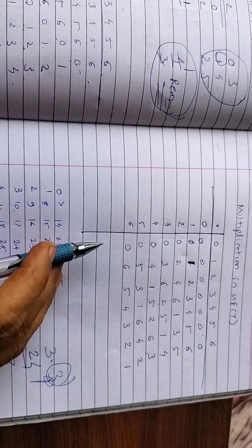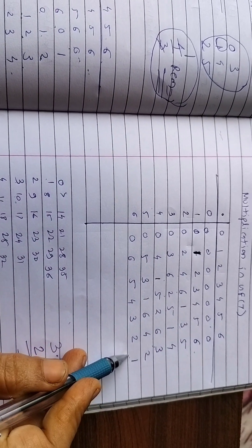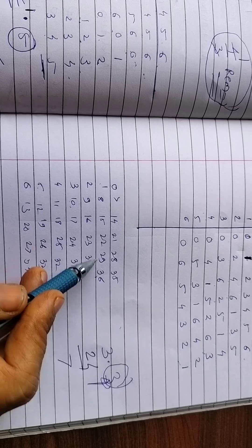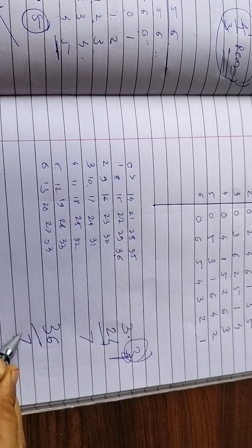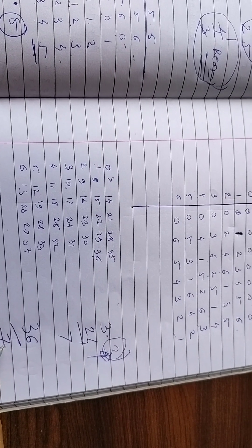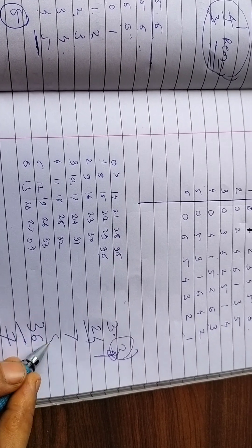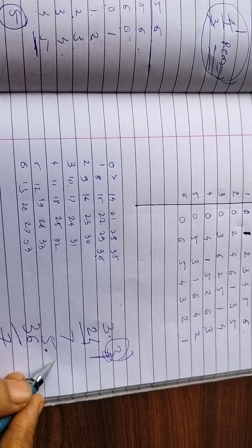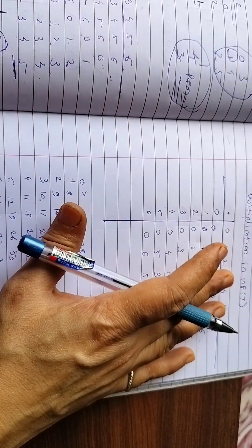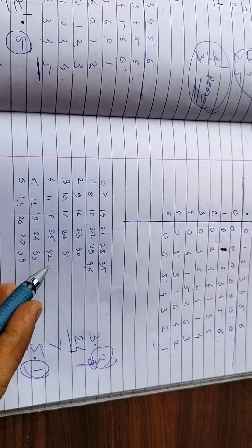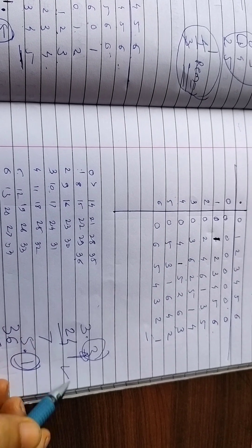Another example: 6×6=36. Using the replacement table, 36 is equivalent to 1. Using the mod method: 36 divided by 7 — 7 fives are 35, remainder is 1. So 6×6=1 in GF(7). If you need to build the entire table, the replacement table method is best; for finding individual values quickly, the mod method is more convenient.